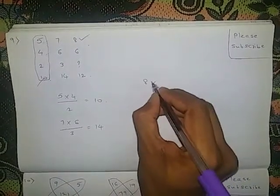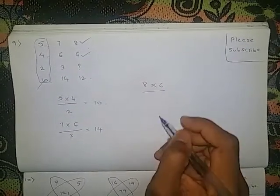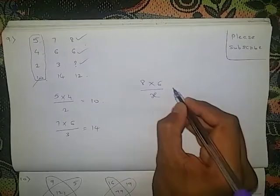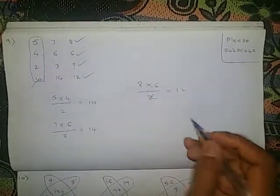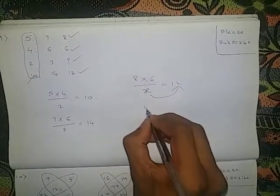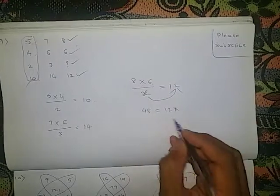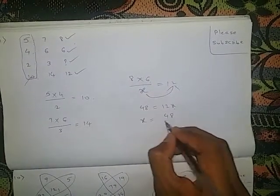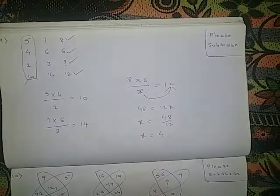First number 8 into second number 6, divided by third number — we don't know, taking it as constant X — equals fourth number 12. So 8 into 6 is 48, equals 12X. We want X value: X equals 48 by 12. So X equals 4.